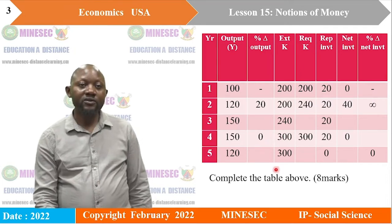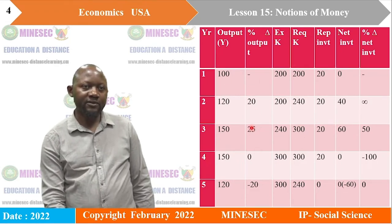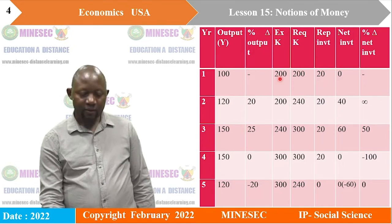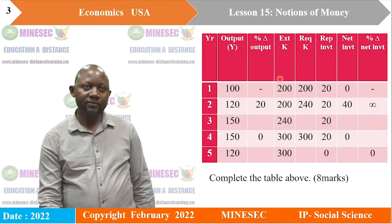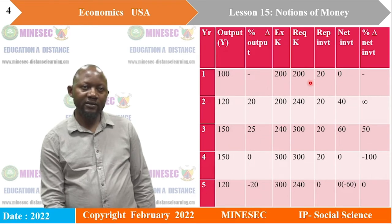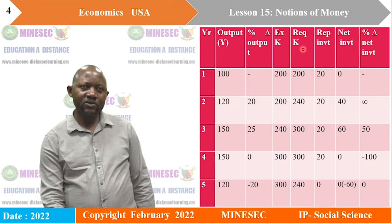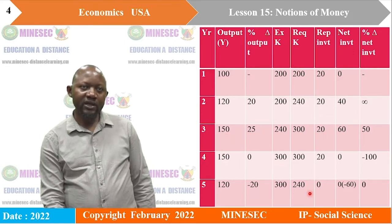Now let's get to the correction. The existing capital was given. Required capital was not completely given. Given the capital-output ratio of 2:1, we have: 100 times 2 gives 200; 120 times 2 gives 240; 150 times 2 gives 300, and so on for the rest of the values. Replacement investment was given. Net investment was not completely given — net investment equals required capital minus existing capital. So 200 minus 200 is 0; 240 minus 240 is 0, and so forth.